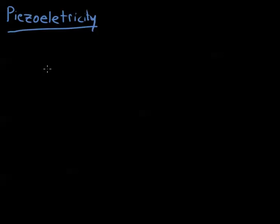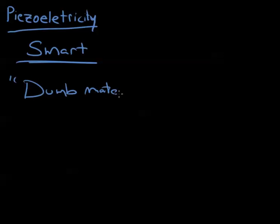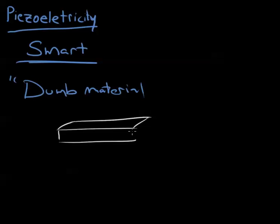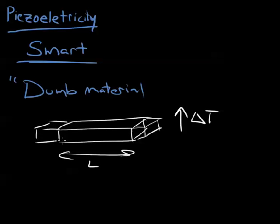Piezoelectricity is a pretty unique phenomenon, and materials which have piezoelectricity are called smart materials. The reason we're calling these materials smart is because they have an unconventional coupling. For example, let's take a dumb material - let's say we have a piece of metal with length L. If you increase the temperature delta T, this dumb material is going to grow a little bit longer, it's going to get bigger.